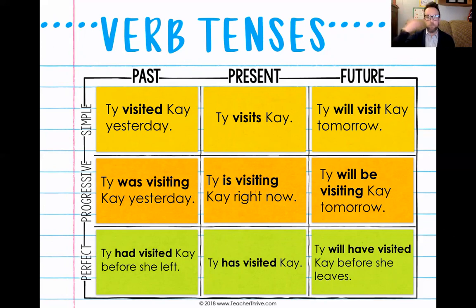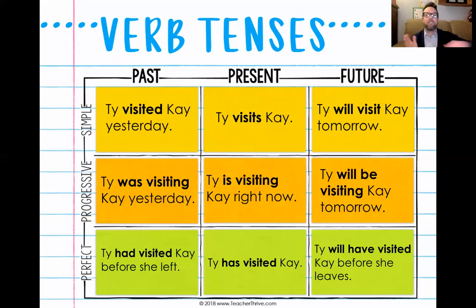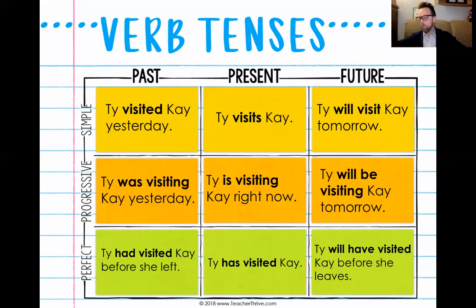Maybe K is going on vacation — before that happens, Ty is going to visit. So to summarize all tenses: simple past: 'Ty visited'; simple present: 'Ty visits'; simple future: 'Ty will visit.' Past progressive: 'Ty was visiting'; present progressive: 'Ty is visiting'; future progressive: 'Ty will be visiting.' And our perfect tenses, which talk about events happening in sequence — past perfect: 'Ty had visited'; present perfect: 'Ty has visited'; future perfect: 'Ty will have visited.'